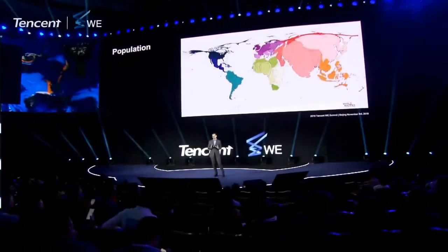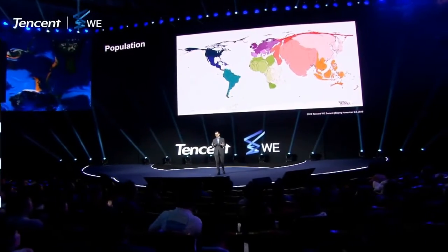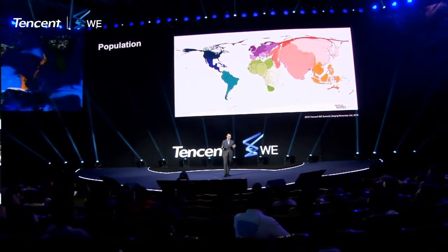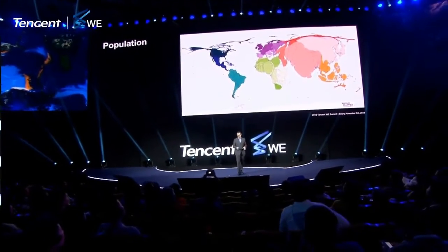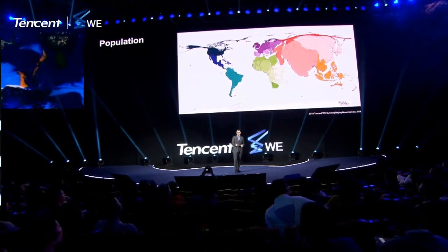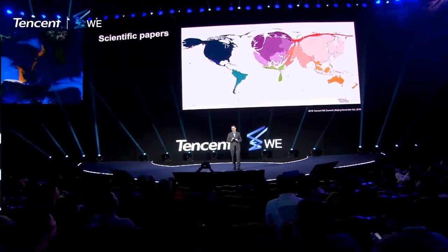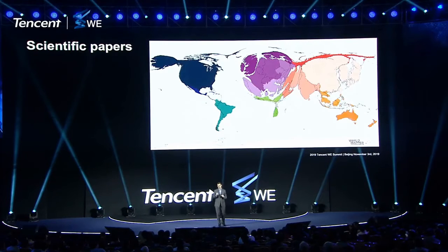This is what the world population looks like mapped out over the countries. Some countries are more heavily populated than others, but overall the entire world is full of people. If we now do the exact same thing for the number of scientific papers in any discipline that come out of these countries, the picture is radically different. The vast majority of papers come from the Global North; the Global South contributes substantially less. For example, if you focus your eyes on Africa, the continent has almost disappeared.